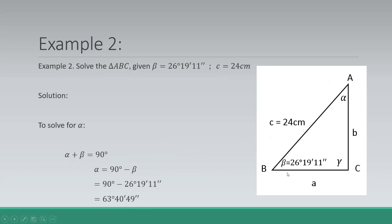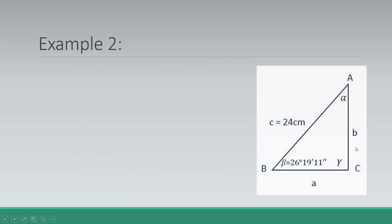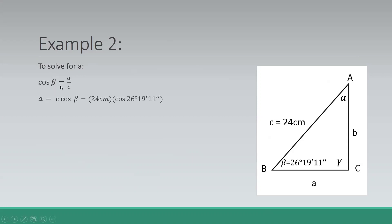Now that we have the values of both angles, we still have to solve for the legs. To solve for side A, we use the function cosine beta, which is the adjacent side over the hypotenuse. Cross-multiplying, A equals C times cosine beta, which is 24 centimeters times cosine 26 degrees 19 minutes and 11 seconds, giving us side A equal to 21.51 centimeters.